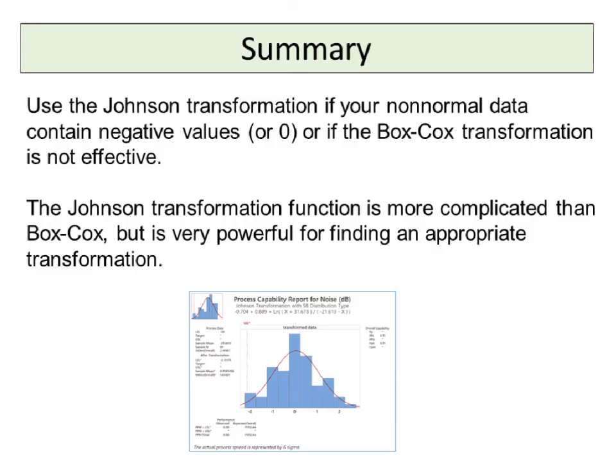In summary, use the Johnson transformation if your non-normal data contain negative values or zero, or if the Box-Cox transformation is not effective. The Johnson transformation function is more complicated than Box-Cox, but is very powerful for finding an appropriate transformation.